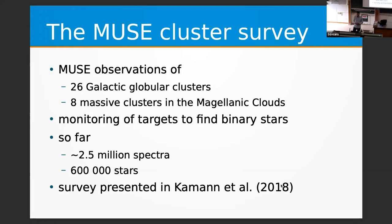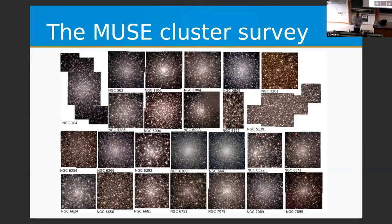The survey includes monitoring of targets to find and characterize binary stars, and so far has produced about 2.5 million spectra of approximately 600,000 stars. Here you see all the pointings we got for the Milky Way globular clusters. In the following, I want to show you some of the science we could do with these data, covering the diversity from abundance measurements over stellar rotation to kinematics.